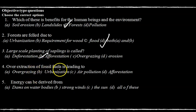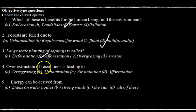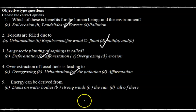Question four: overextraction of fossil fuels is leading to — the correct answer is option C, air pollution. Option D, afforestation, is not the answer.